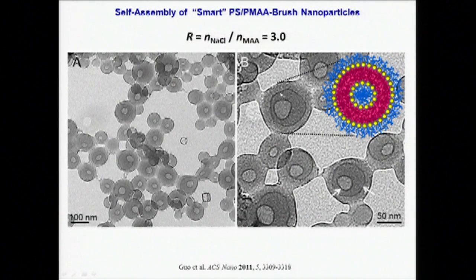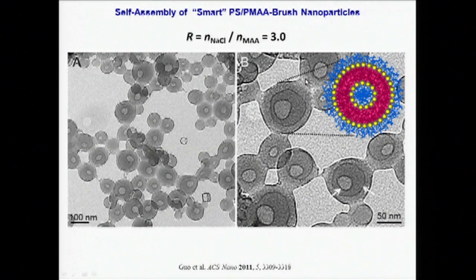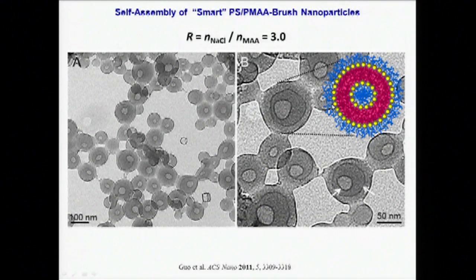As shown in these TEM images at different magnifications, we obtain bilayer vesicles of amphiphilic quantum dots, with the quantum dots localized at two different interfaces on either side of the polystyrene vesicle wall.